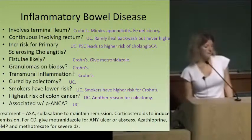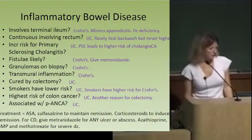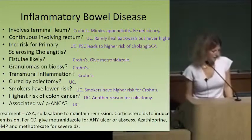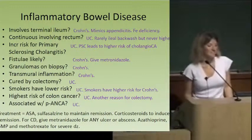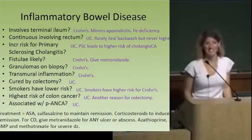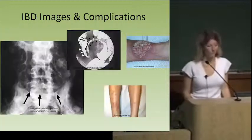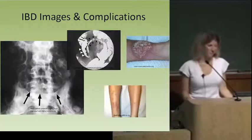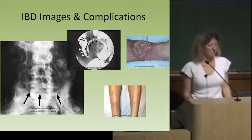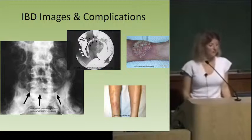Some pictures: this abdominal x-ray — the arrows point to badness in the wall of the colon. This is toxic megacolon with pneumatosis intestinalis, air in the wall of the colon. You can see it's widely dilated — this looks bad. Toxic megacolon is a surgical emergency.